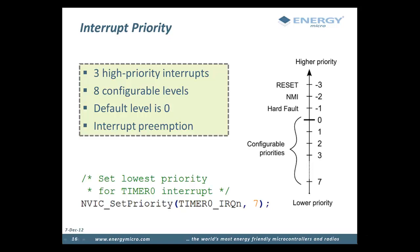Until now, we have not discussed what happens when an interrupt occurs while another interrupt is currently executing. Interrupts on the EFM32 have eight configurable priority levels, with zero being the highest and seven the lowest. By default, all interrupts have priority level zero. Both internal Cortex-specific interrupts and device-specific interrupts have configurable priorities. There are only three exceptions: Reset, which always has the highest priority; the non-maskable interrupt, which can be triggered by software; and a hard fault. These all have numbers lower than zero, so no interrupt can have a higher priority than these.